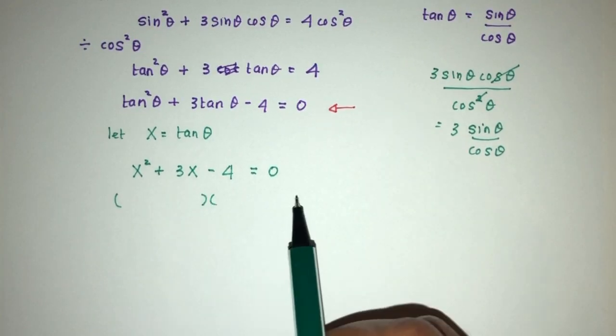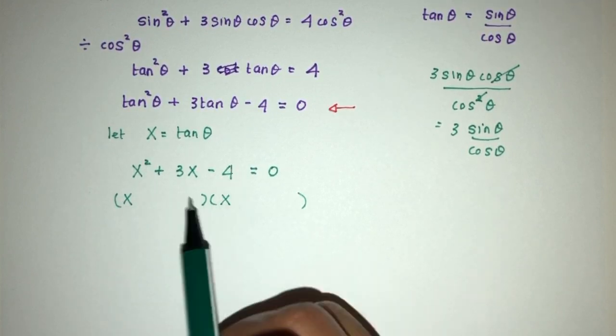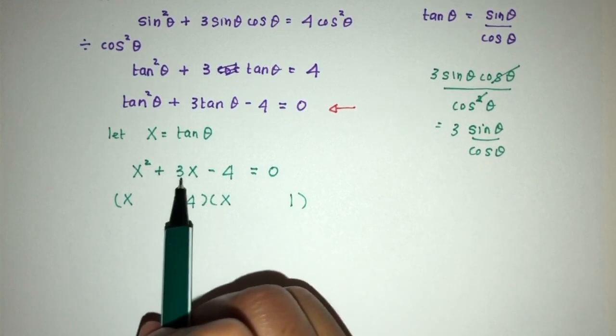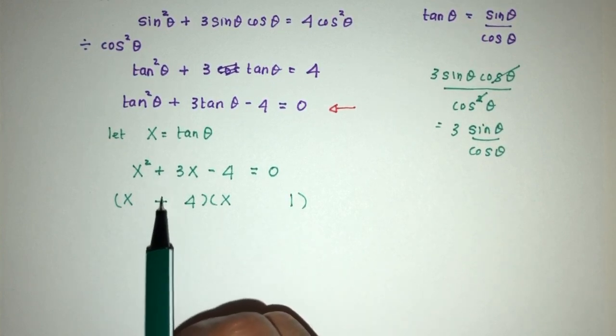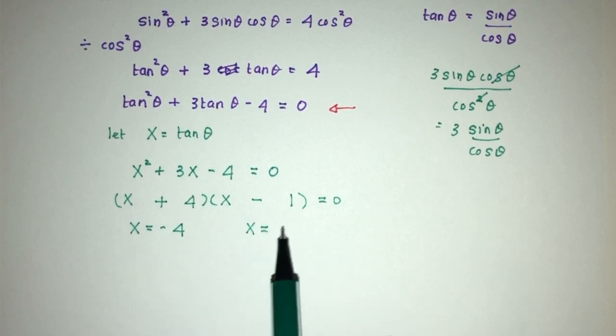Here we have x², it is x times x, and 4 is 4 times 1. We need plus 3, so I have plus 4 minus 1. So x will be minus 4, x will be 1.